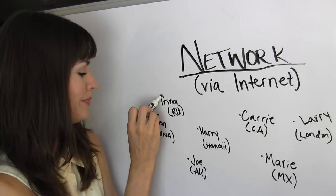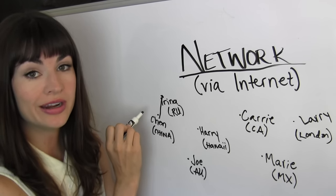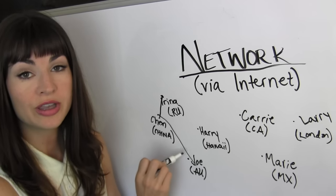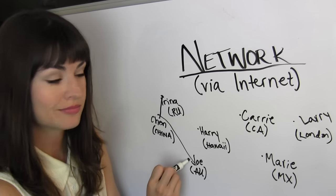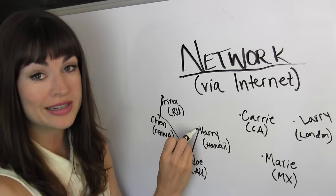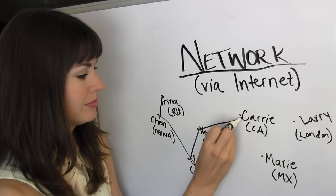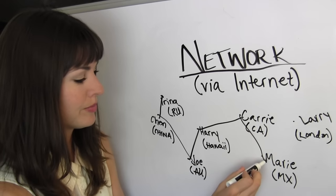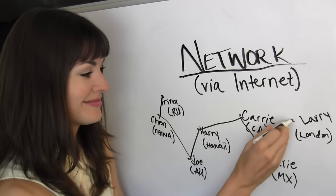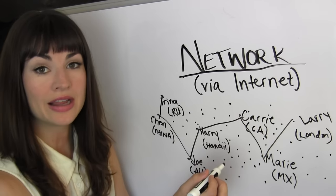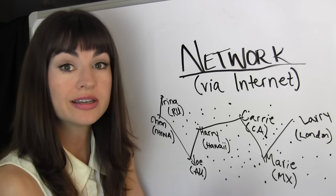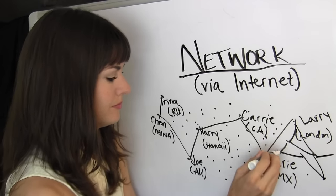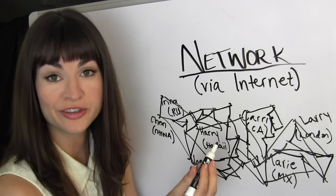Irina in Russia communicates to Chen in China, communicates to Joe in Australia, communicates to Harry in Hawaii, communicates to Kerry in California, Marie in Mexico, Larry in London, and hundreds or thousands more people across the world looking something like this. You get the general picture.